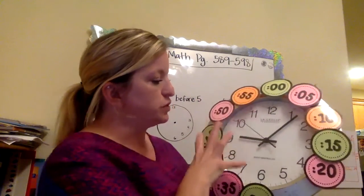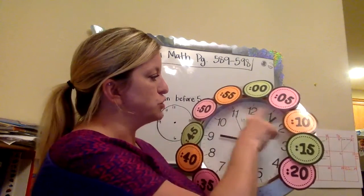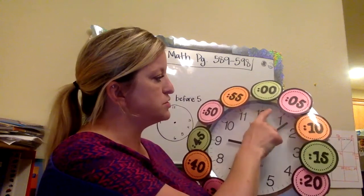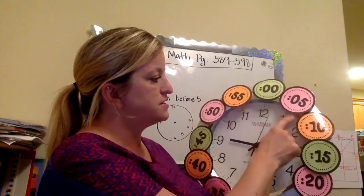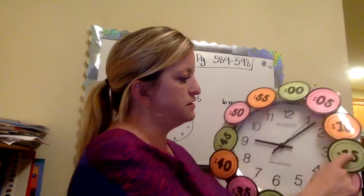So this is really cool because it ties into multiplication as well. Each group of these is five minutes. So there's five little lines. One, two, three, four, five, six, seven, eight, nine, 10. So if you notice, five, 10, 15, 20.